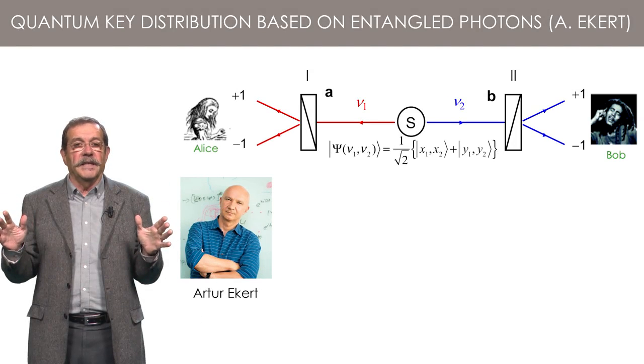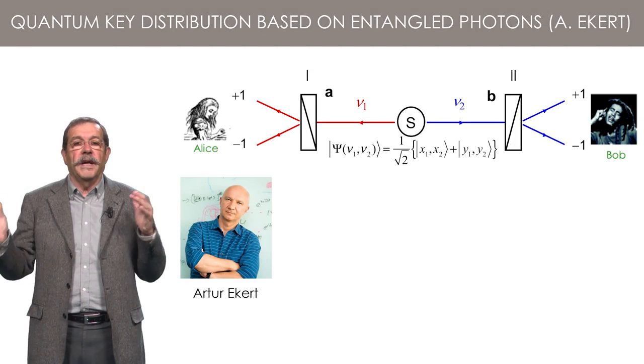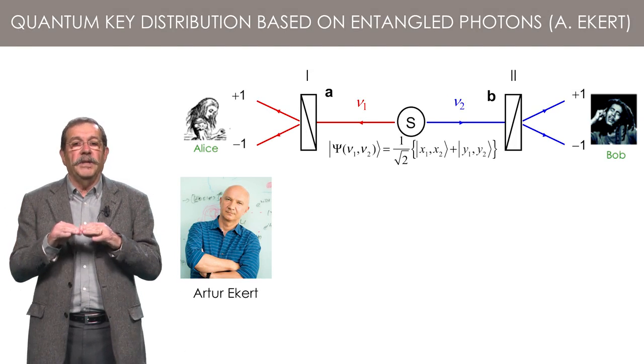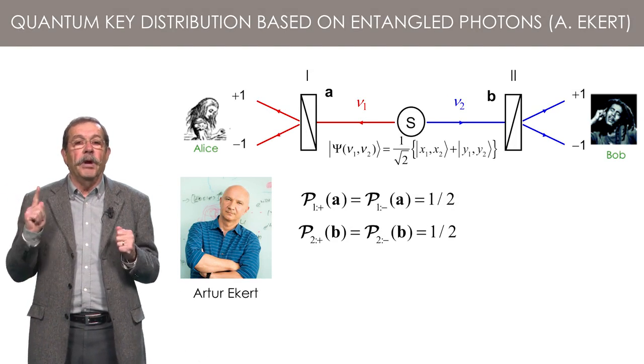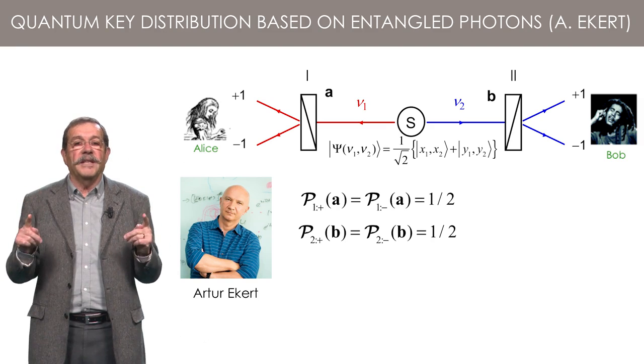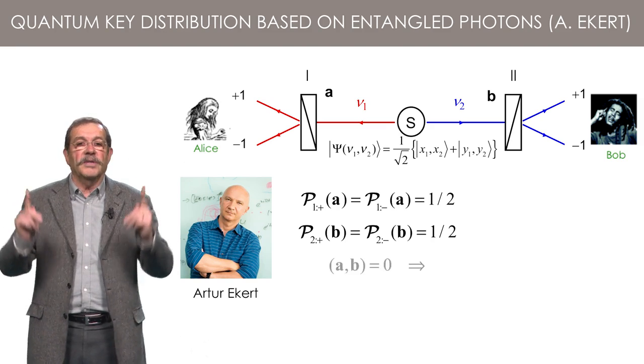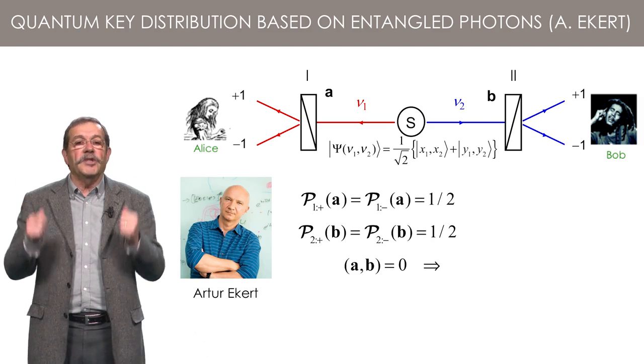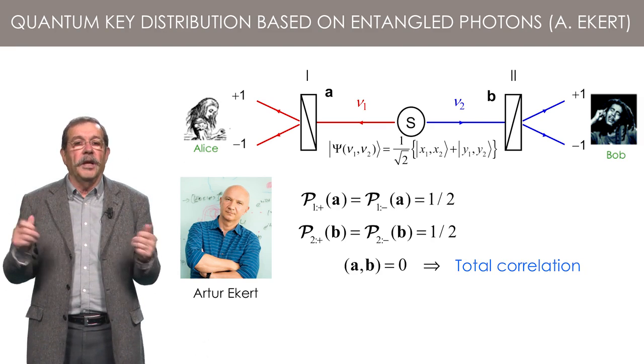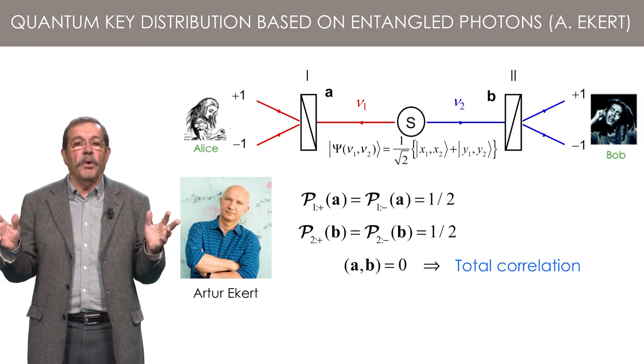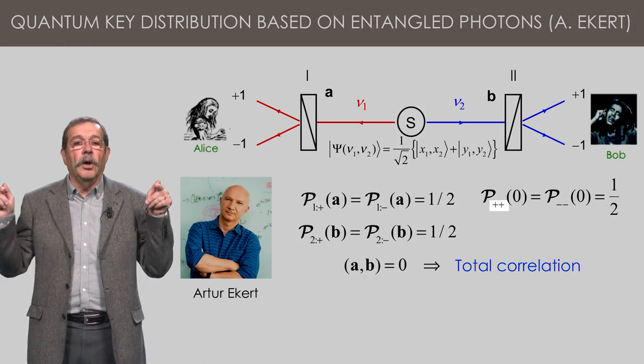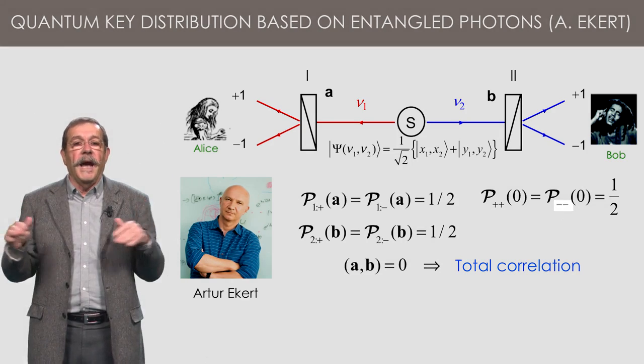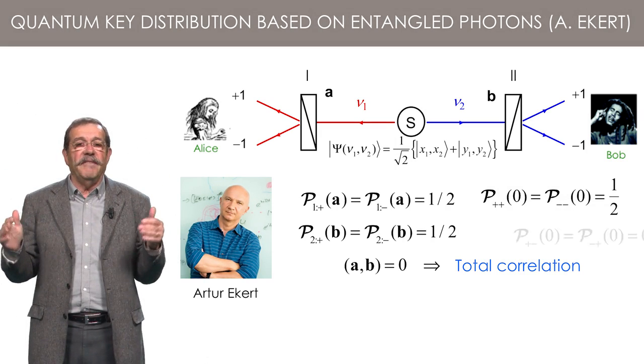Remember what you learned last week, and you should be able to guess yourself the basic idea. At each polarizer, the results plus 1 and minus 1 are happening randomly with equal probabilities. But, if the polarizers are aligned along the same direction, there is a total correlation between the random results on both sides.